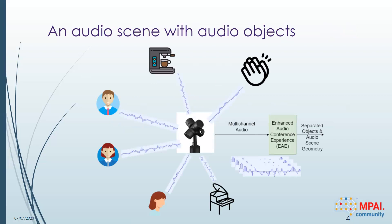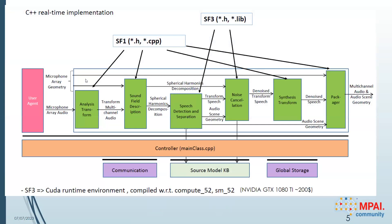We obtain multi-channel audio as the input to the Enhanced Audio Conference Experience. At the end, we create separated objects and the audio scene geometry. For the C++ real-time implementation, we have six AIMs orchestrating to create a multi-channel audio output consisting of separated speech sources and the audio scene geometry. These AIMs are already shared in the GitLab account of MPAI. Source codes are available for four of these AIMs, while the speech detection/separation and noise cancellation AIMs are available as compiled versions.